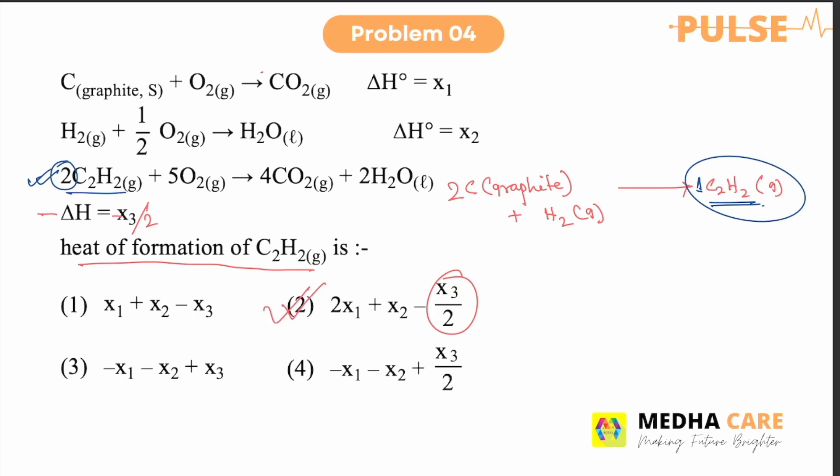But if you calculate this one, you can see here in the equation carbon graphite, you have to multiply that one by two. So here you have to multiply this carbon equation by two. So that will be 2x1 and hydrogen it is one. So you don't need to multiply. So x2 and you have to reverse this reaction. You have to reverse the third reaction as the C2H2 on the right hand side. So in this case, then the delta H value will be negative and you have to also divide that one by two. So the correct answer will be 2x1 plus x2 minus x3 by two.